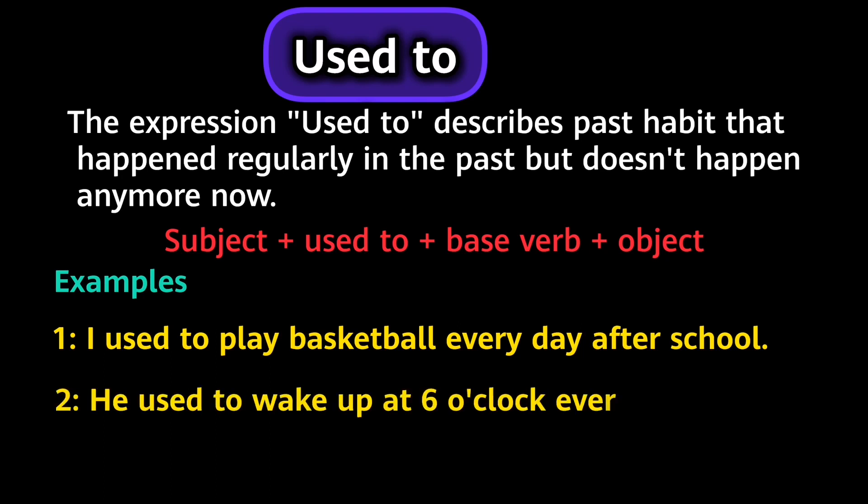He used to wake up at 6 o'clock every morning. Again, observe this sentence — it is used after the subject and it also shows past habit. It means that it was his habit to wake up at 6 o'clock every morning, but this habit is no more part of his life. Now he does not wake up at 6 o'clock in the morning, but he used to.